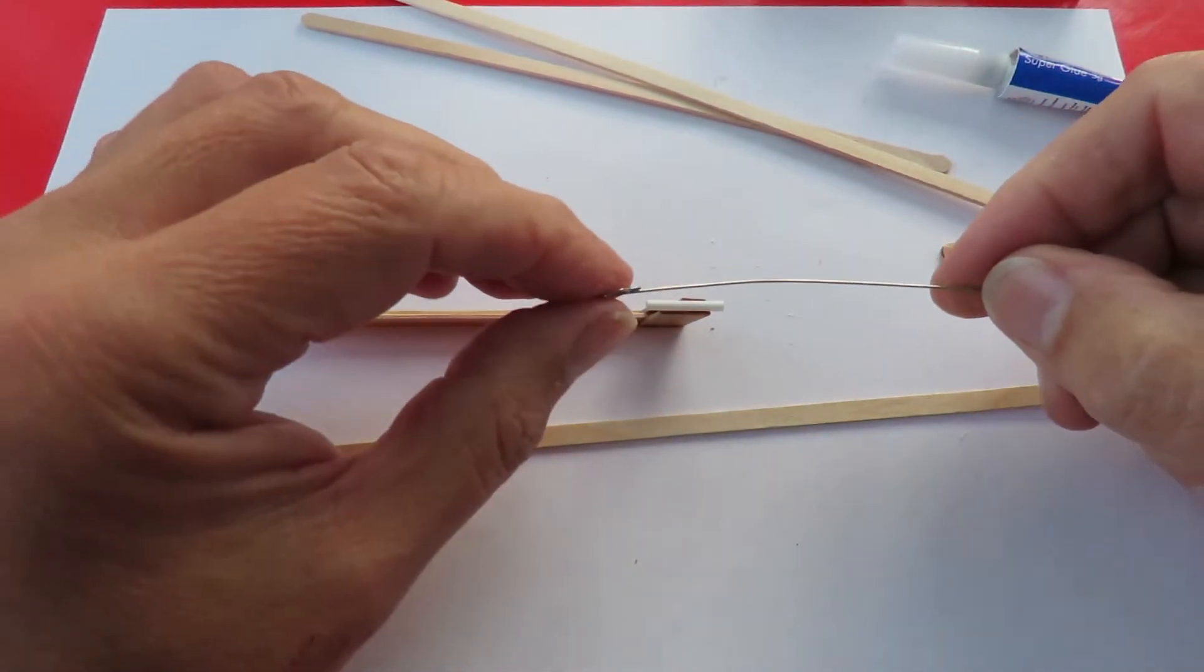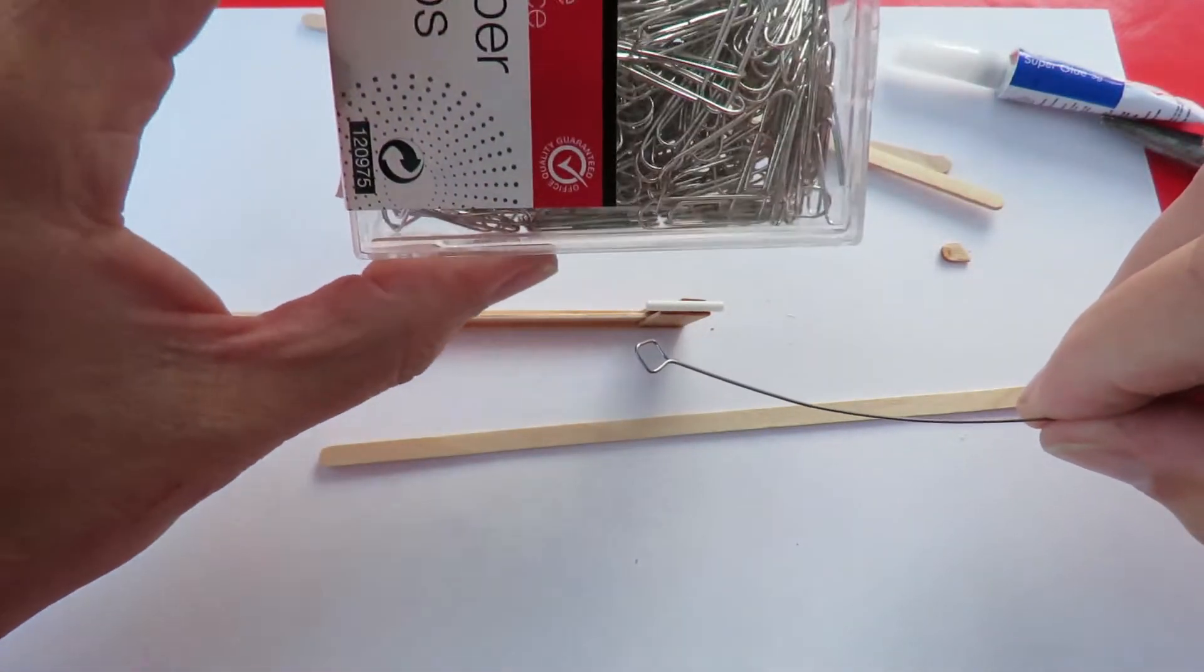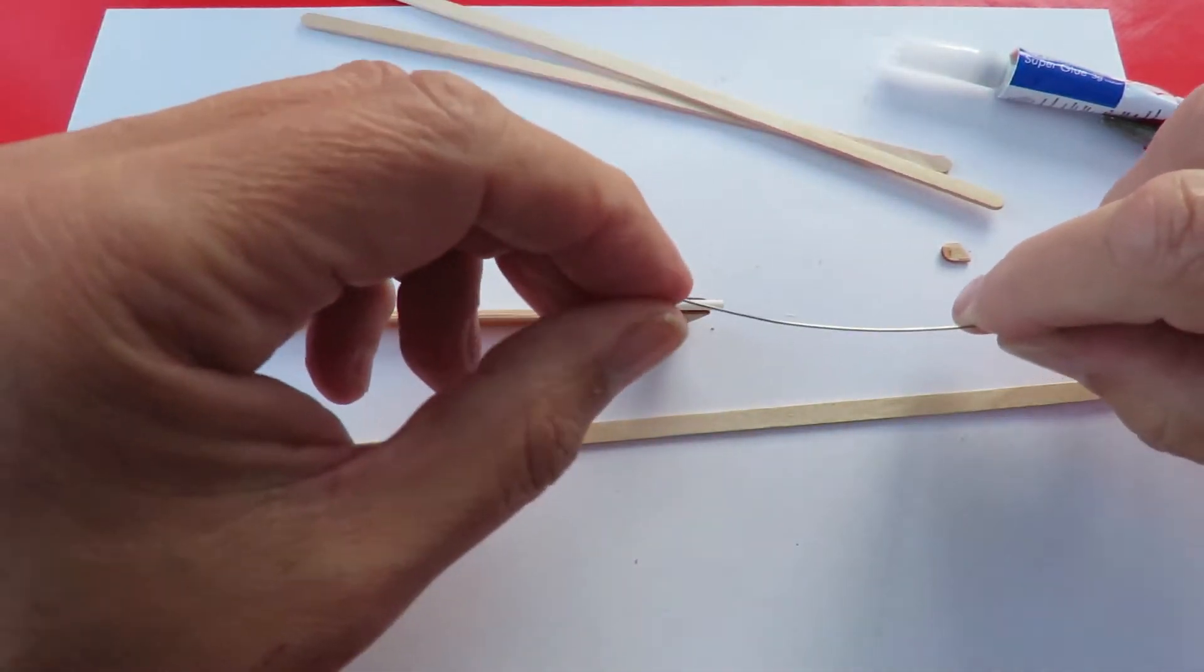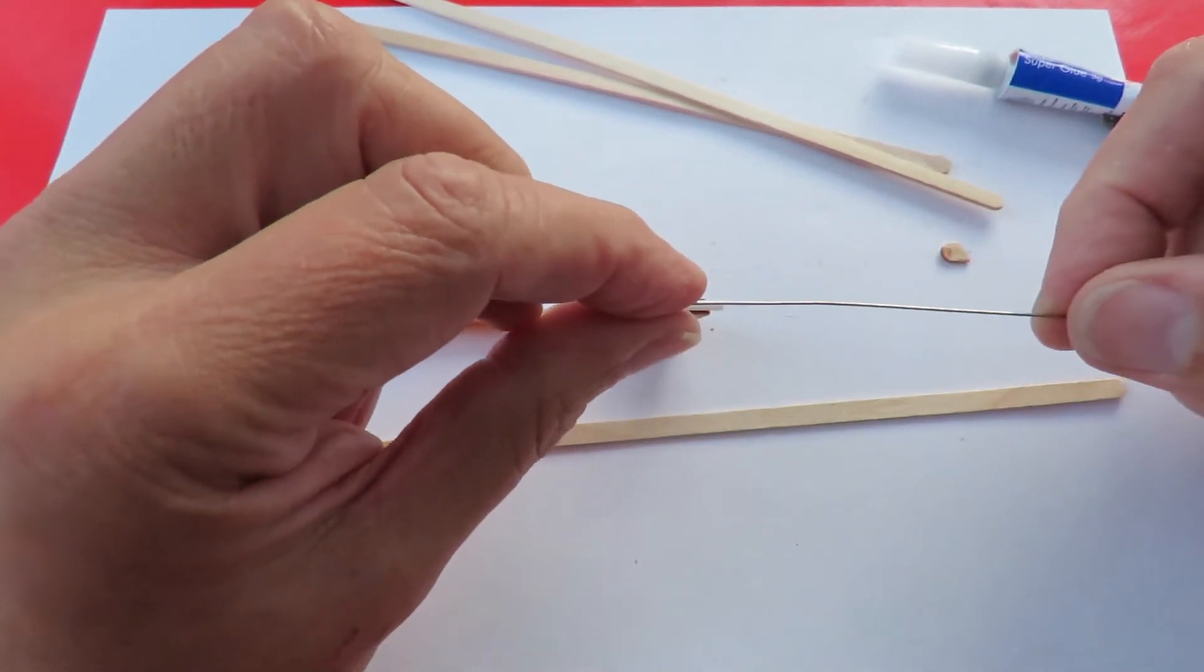For the shaft for the propeller I've got this bit of thin wire. A paper clip would probably do that. I found this piece of wire. I think it was the aerial off of one of the toy radio controlled cars that I've got.